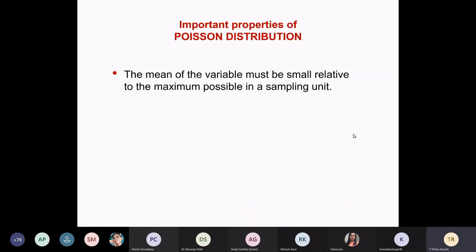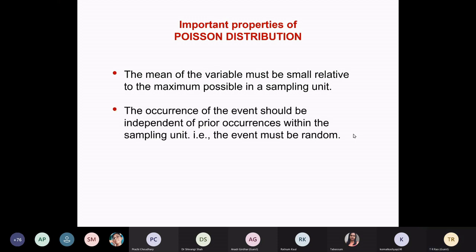There are two important properties of Poisson distribution. First, the mean of the variable must be small relative to the maximum possible in a sampling unit. Second, the occurrence of the event should be independent of prior occurrences within the sampling unit. This is the one that we hang on to for testing randomness. Since this is an important property of Poisson distribution, we can use it quantitatively to test if a sample, events, or processes are random. Apply Poisson distribution and see if it is.